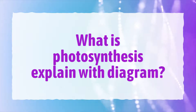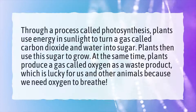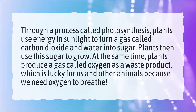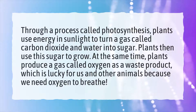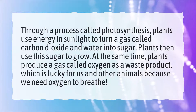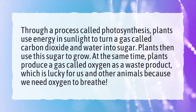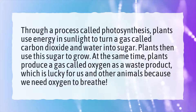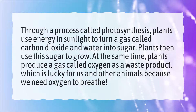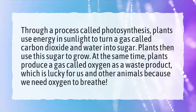What Is Photosynthesis? Through a process called photosynthesis, plants use energy in sunlight to turn a gas called carbon dioxide and water into sugar. Plants then use this sugar to grow. At the same time, plants produce a gas called oxygen as a waste product, which is lucky for us and other animals because we need oxygen to breathe.